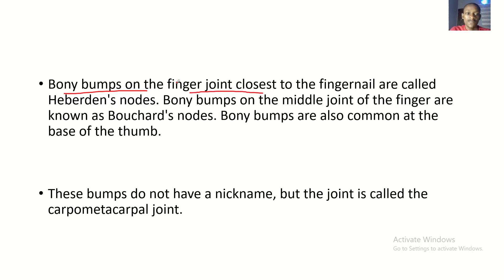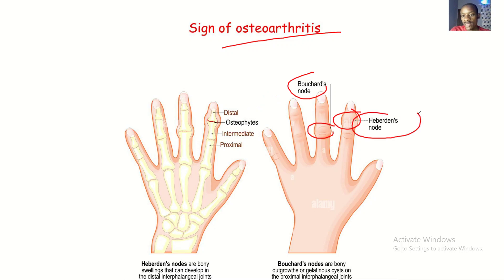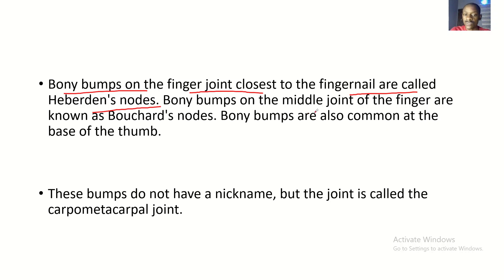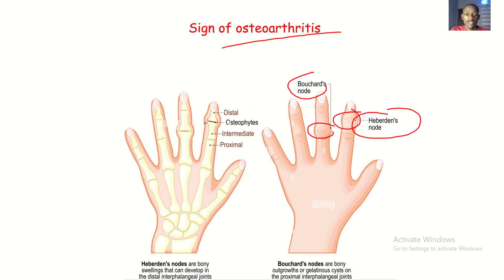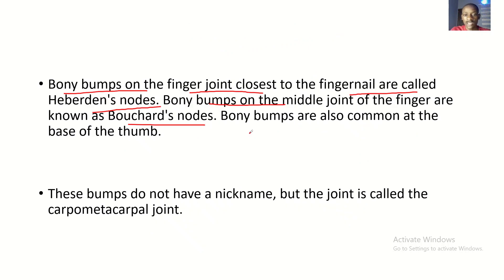The bony bumps on the finger joint closest to the fingernail are the Heberden's nodes — those are at the distal phalanx. The bony bumps on the middle joints of the finger are known as Bouchard's nodes. Bony bumps are also common at the base of the thumb, but the most studied ones are those on the distal phalanx and the middle phalanx.